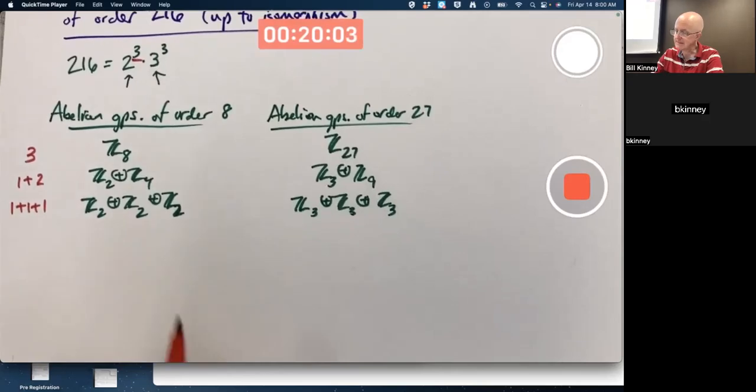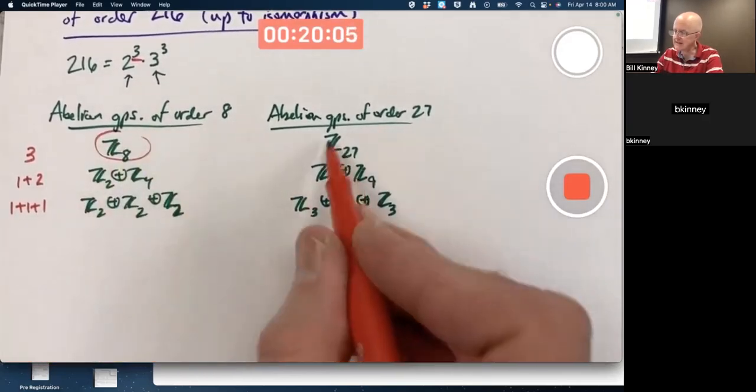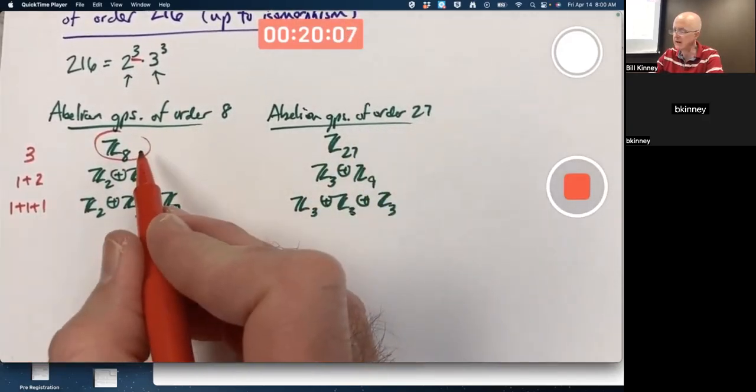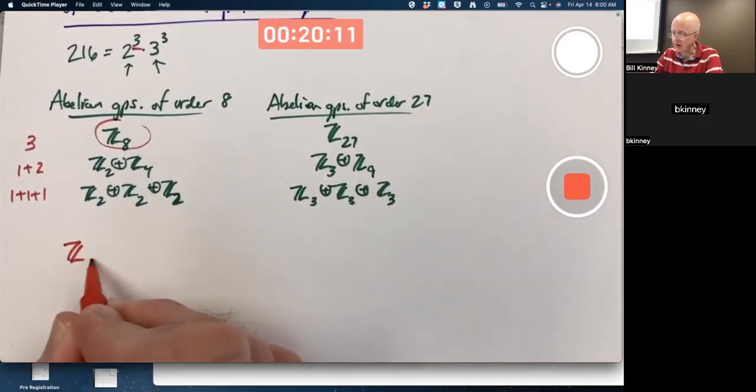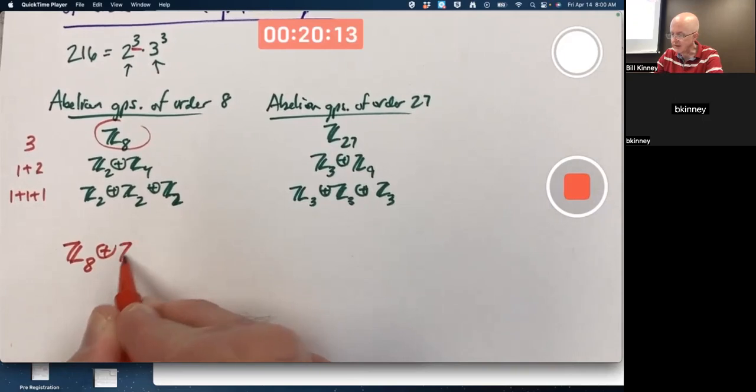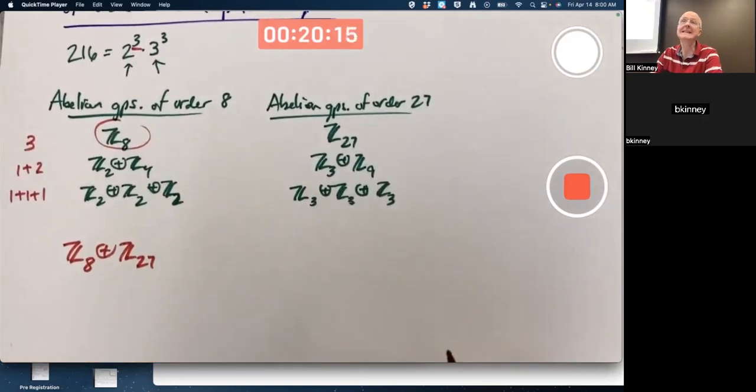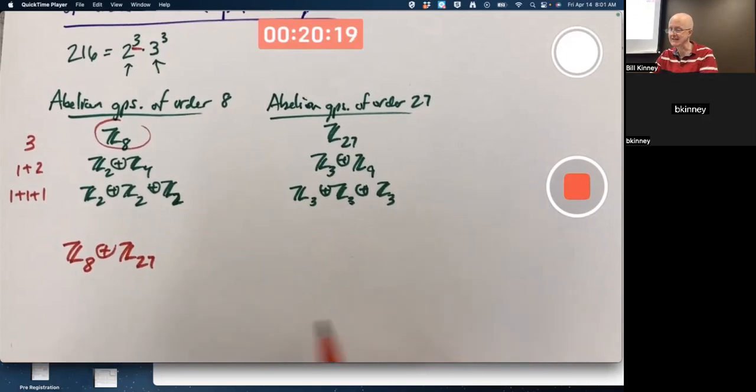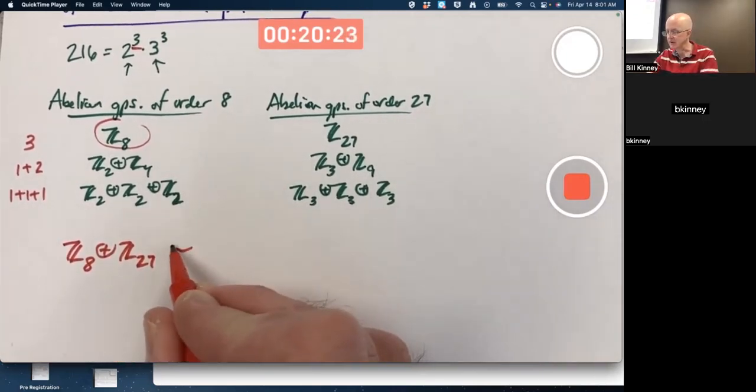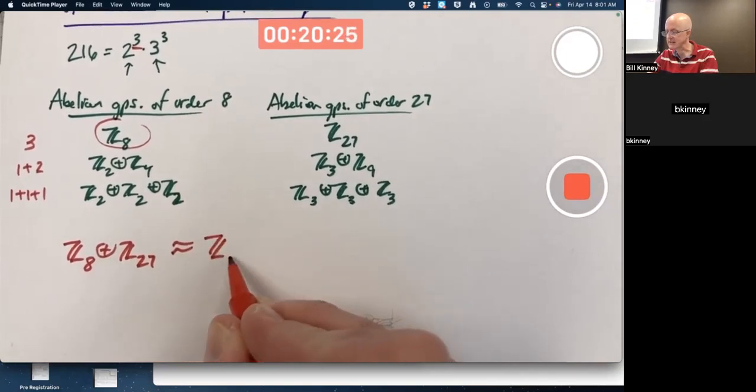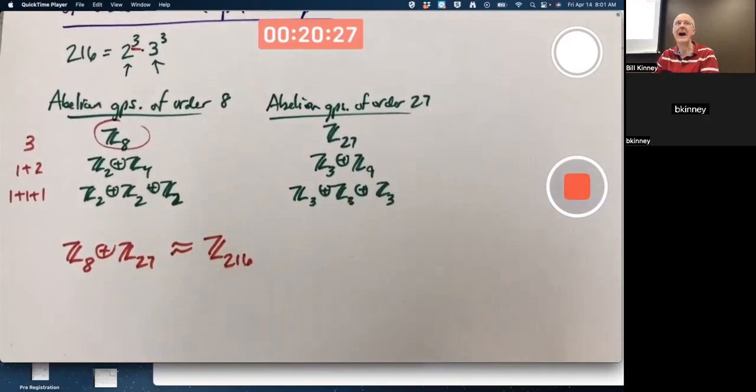So your first possibility, let's start with Z₈ and consider all external direct products of Z₈ with these three. You've got the external direct product of Z₈ with Z₂₇, which is the cyclic, the one cyclic possibility. Since 8 and 27 are relatively prime, you can multiply them and say this is isomorphic to Z₂₁₆. That out of the nine possible abelian groups of order 216 is the one that is cyclic.